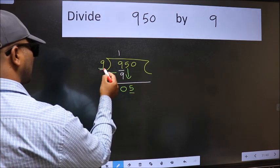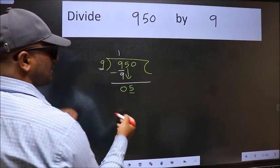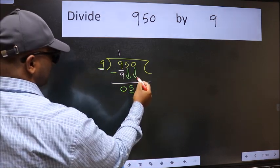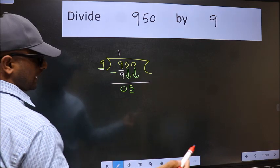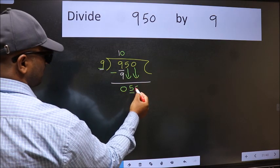Now here we have 5 and here 9. 5 is smaller than 9. So we should bring down the second number. And the rule to bring down second number is we should put 0 here. Then only we can bring this number down.